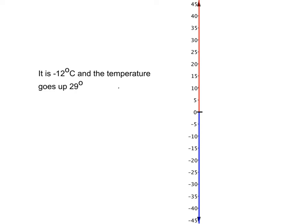Okay, I want you to try one for yourself now. This one says it's negative 12 degrees centigrade and the temperature goes up by 29 degrees. Where will you end up? Again, you've got a thermometer in your homework book. I want you to use that thermometer to help you. Pause the video and try it now.